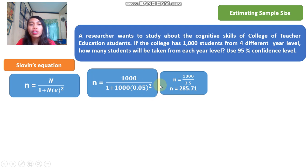Use your calculator. So we will have 1,000 all over 3.5 is 285.71. Round it up, n is equal to 286.